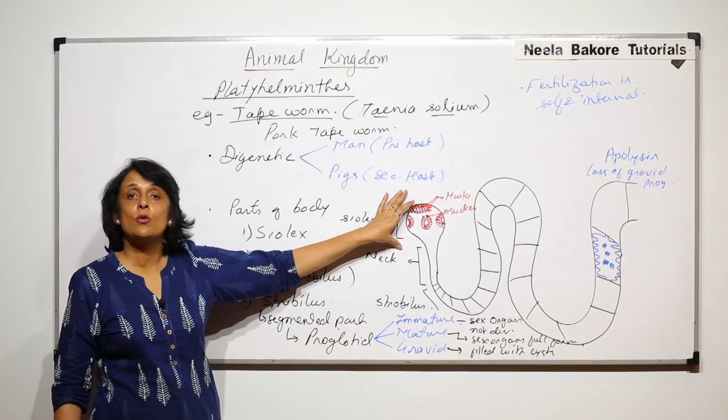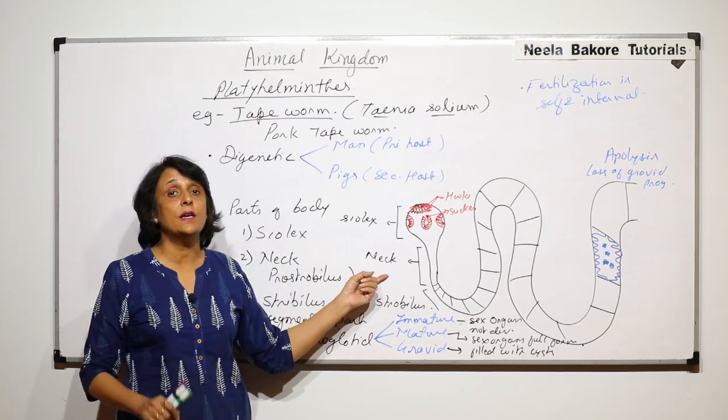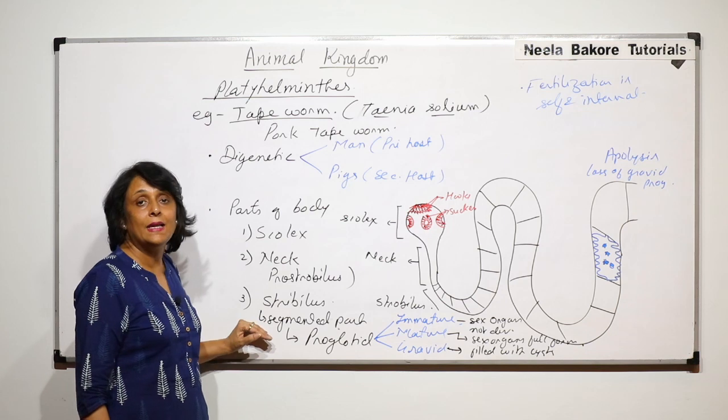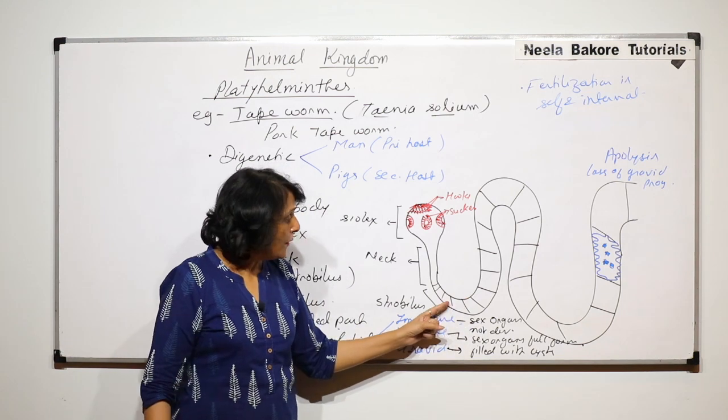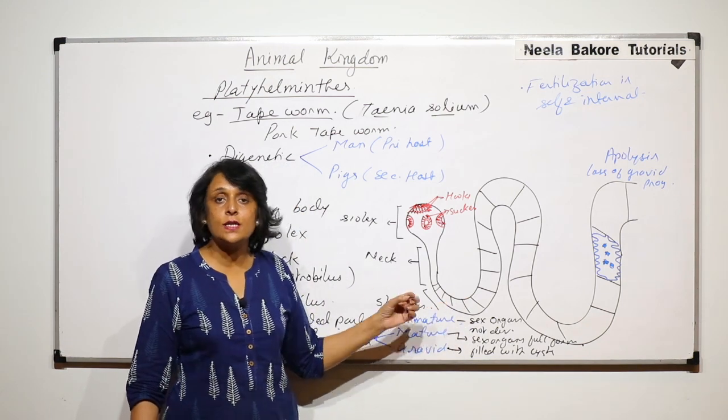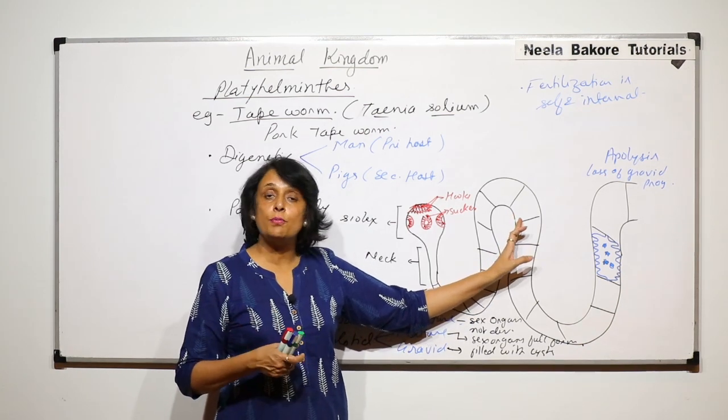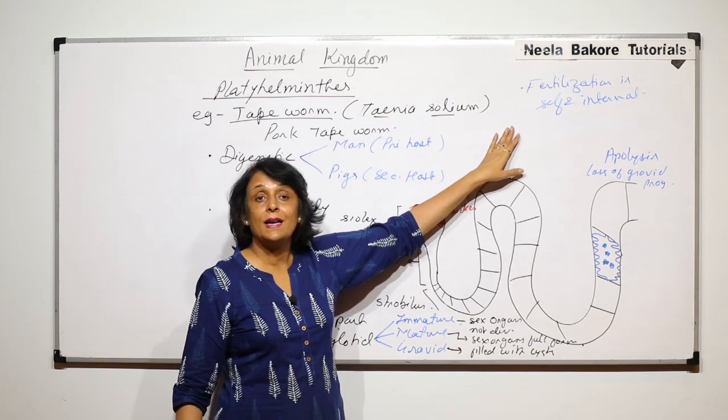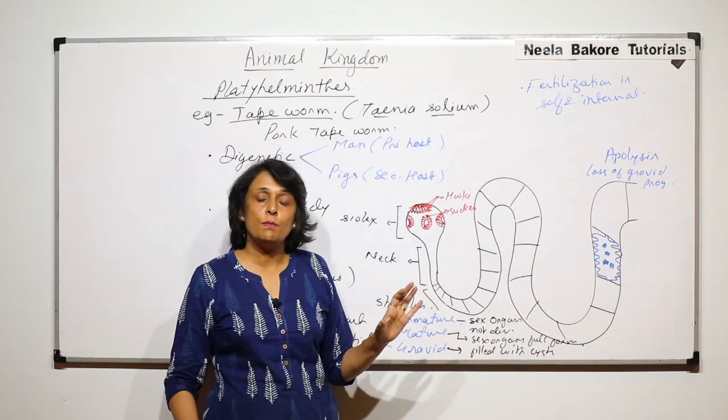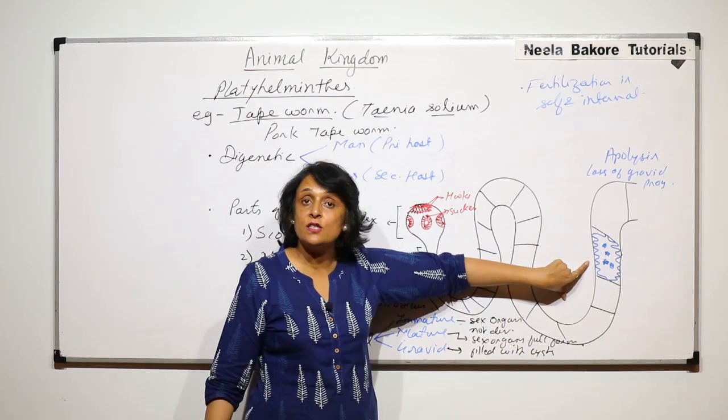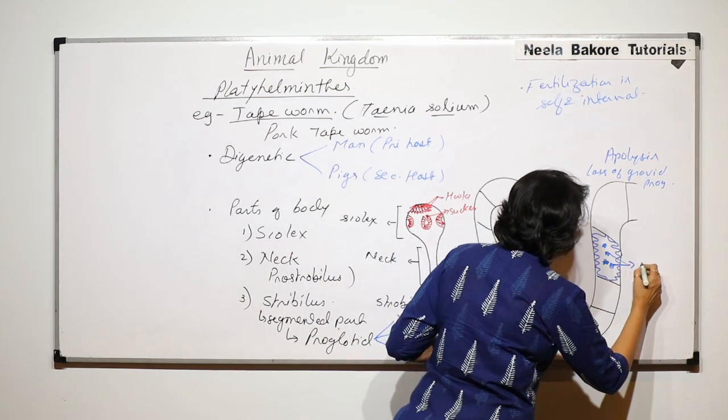So this is how the body is. The scolex has hooks and suckers. The neck part is unsegmented part and from here the new segments or proglotids will be produced. And the strobilus is the rest of the body which is ribbon-like segmented body. First segments or proglotids are going to be immature, then there are mature proglotids where the sex organs are functional and reproduction takes place because gametes are produced. Fertilization is internal and self. And towards the end now every other structure will be lost from the segment. The structure that remains is only the uterus and which is filled with only cysts.